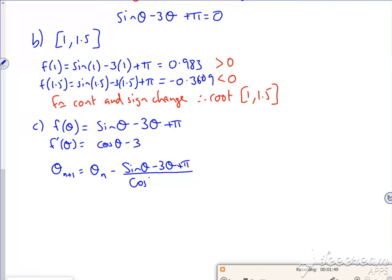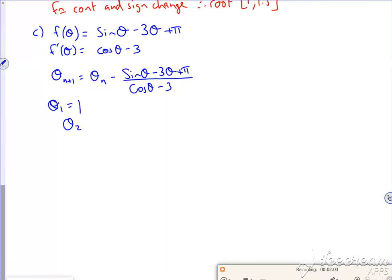It tells me that θ₁ is... oh I've forgotten what it said. So θ₂, it's always nice to write it out in full, will be 1 minus sine of 1 minus 3 lots of 1 plus π over cos of 1 minus 3. I'm just going to pause and get the calculator up. Remember, you're going to put 1 in equals and then put the equation in with the answer.